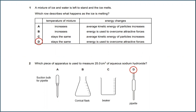Question number 2. Which piece of apparatus is used to measure 25 cm³ of aqueous sodium hydroxide? The answer for this is D.